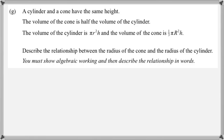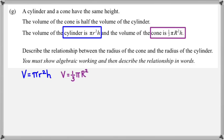Okay, so let's get started. The first bit of information that's important is the volume of the cylinder, which is πr²h. The second bit of information is the volume of the cone, so that's ⅓πR²h.